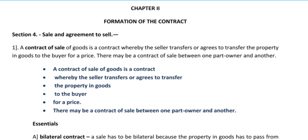This means that goods — transfer of property in goods — means ownership is transferred to the buyer. For what? For a price — that is money consideration. If it is given as a gift, it will not be considered a sale. There may be a contract of sale between one part owner and another — meaning if a thing is owned by many persons, one part owner can sell their share to another, and that will be considered a contract of sale.